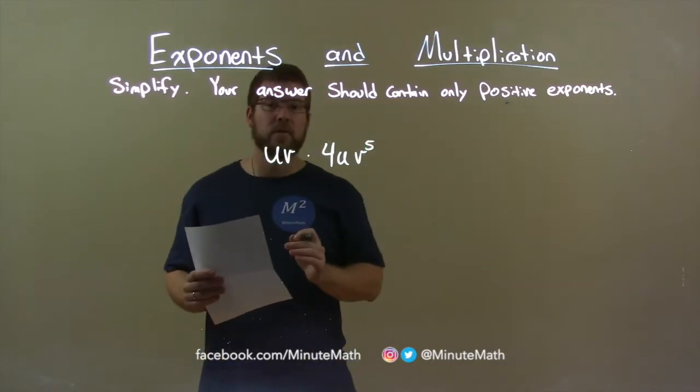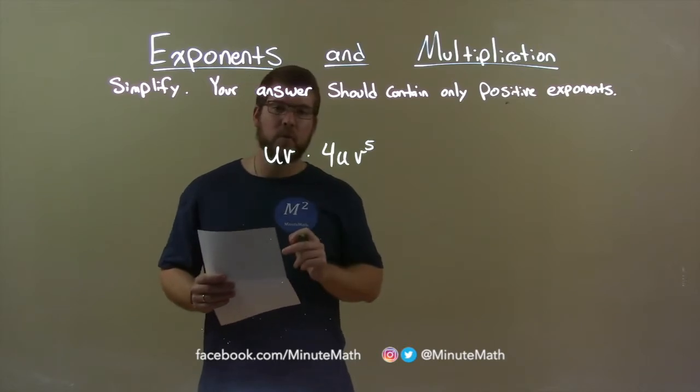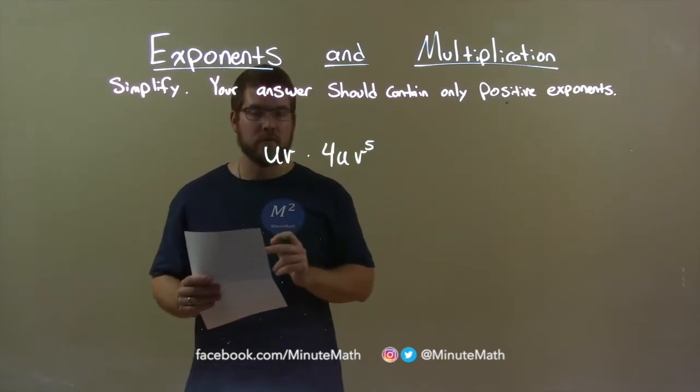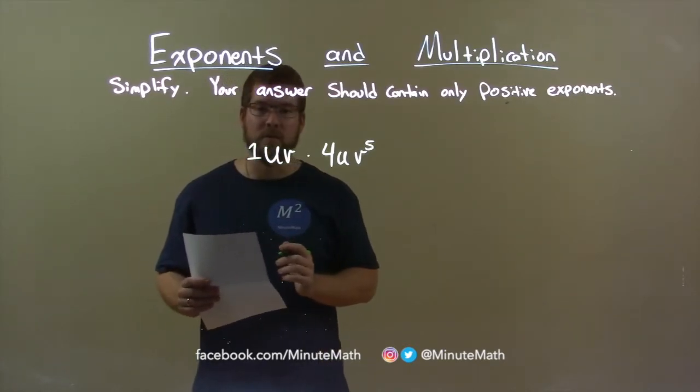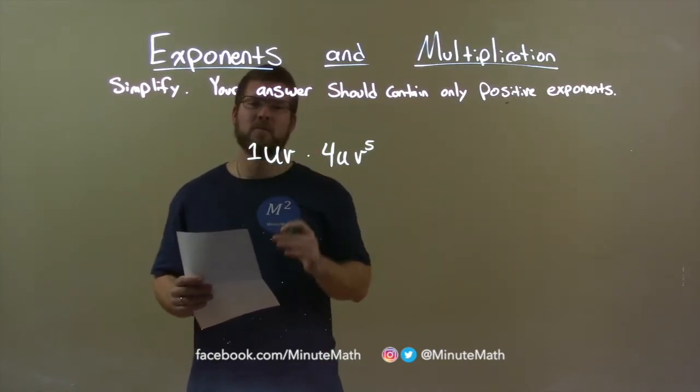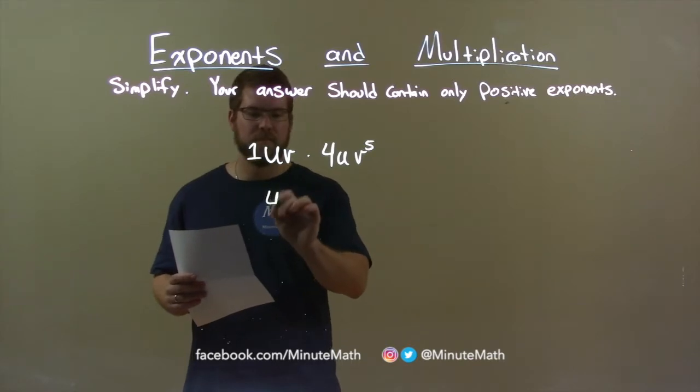First thing with this is I look at the coefficients. Now I see a 4 here, but there's nothing written for the first term. When there's nothing written, we know there is an imaginary 1 that's out in front. So 1 times 4 is just 4. Pretty simple.